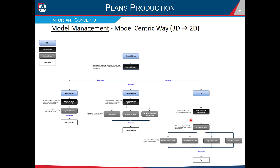The reason we create separate DGN files for our plan deliverables is to avoid production choke points. If we did this all in one file, only one person could access it at a time. By setting up separate DGN files and referencing in the master model, then doing all our 2D cuts and plans production work there, we eliminate those choke points — multiple people can access different files simultaneously.